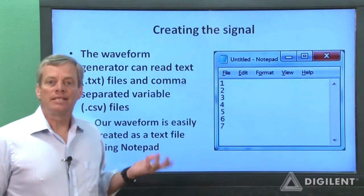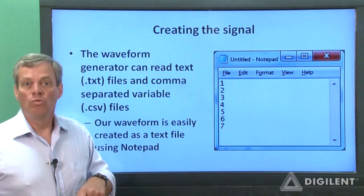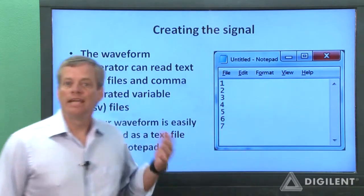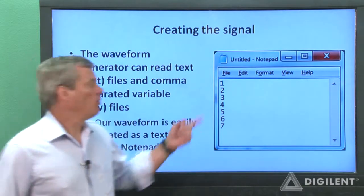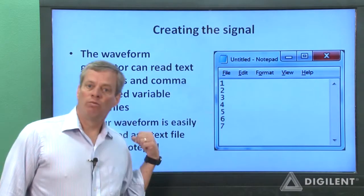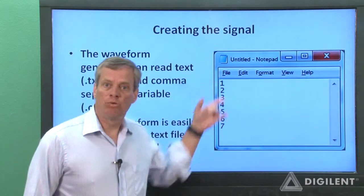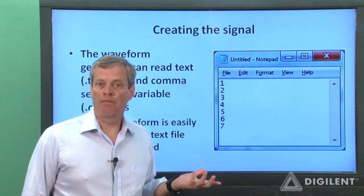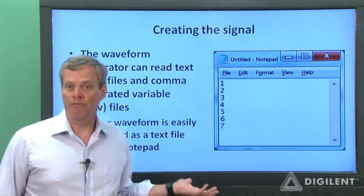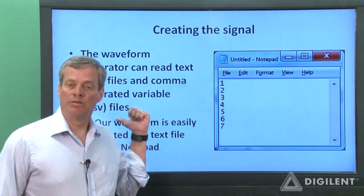The baseband signal we want is very easily created as text data using Notepad. We just create a file containing the levels that we want—for example, 1, 2, 3, 4, 5, and so on—and import the data into the waveform generator. The waveform generator will spread these points out evenly over some time range, which is set by an internal buffer. What we get out is the baseband signal shape we showed on our previous slide.